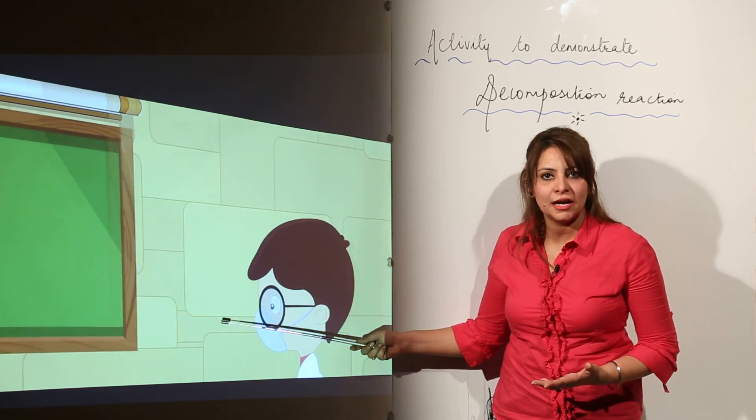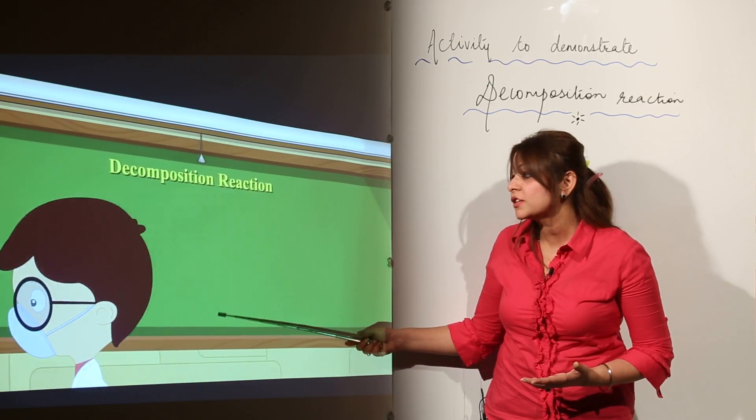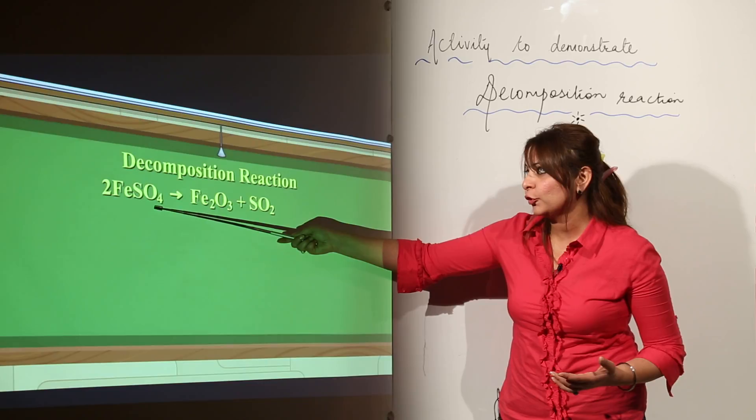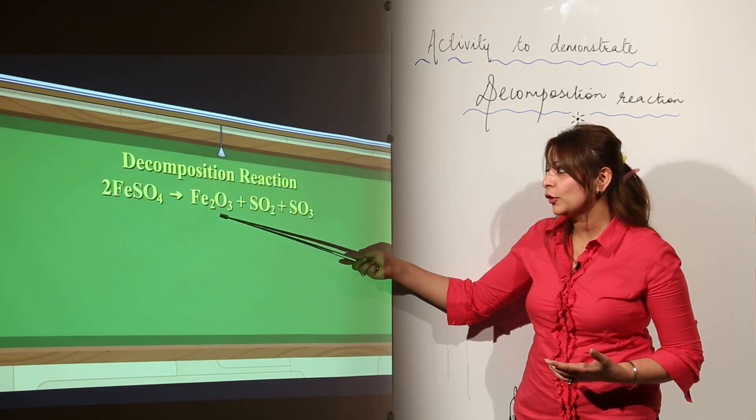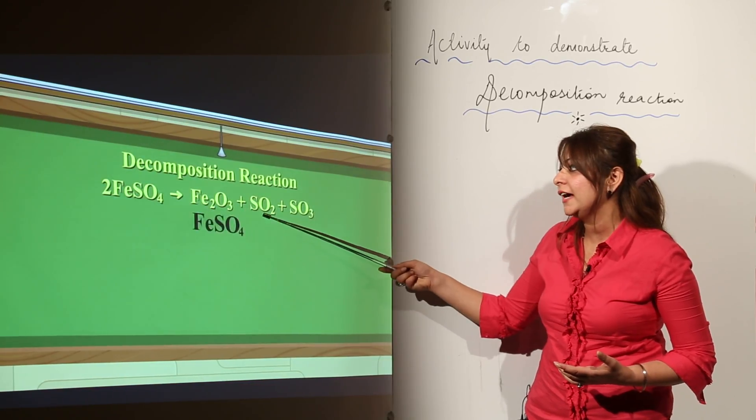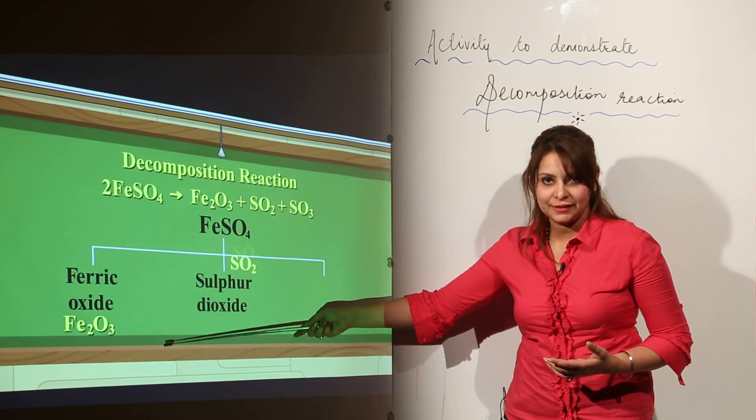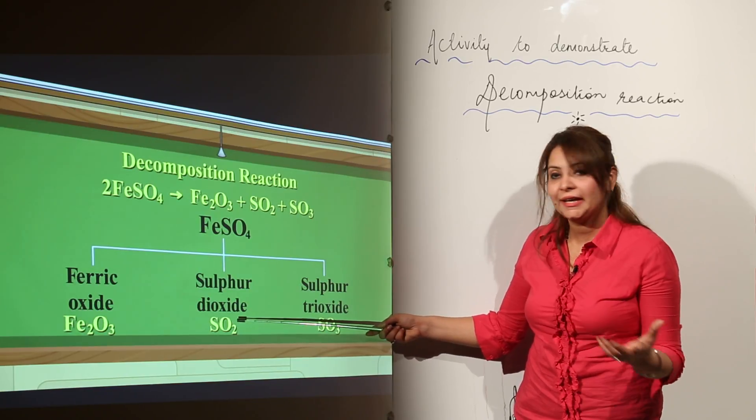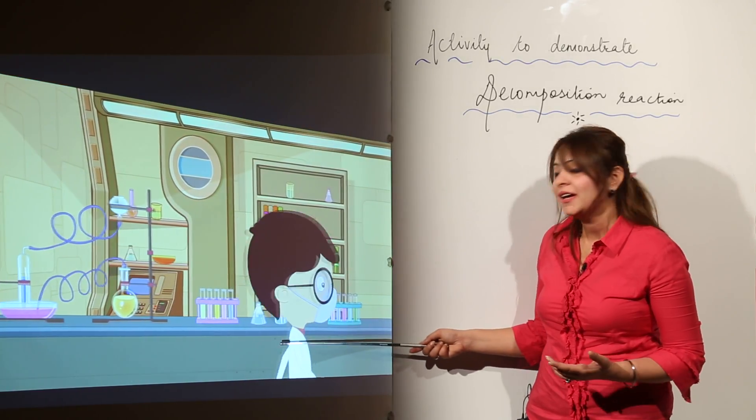We had FeSO4 crystals. When we heated it, it broke into Fe2O3, that is ferric oxide, along with gases. We get three products: Fe2O3 and the pungent rotten egg-like smell gases, that is SO2 and SO3.